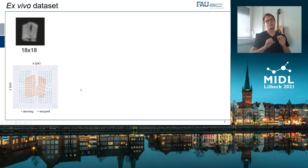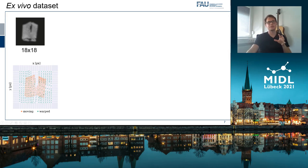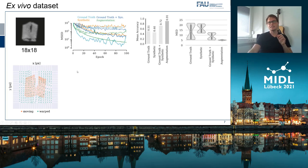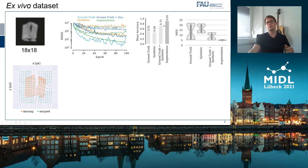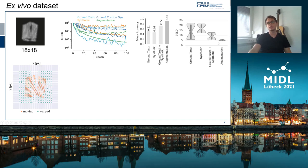When we tested our network on an experimental ex vivo dataset, which is slightly more complex than the synthetic one because it has more laser rays to be registered, we still see that our network and our custom loss function are capable of learning this transformation. The green warped points align quite accurately to the corresponding grid positions. We found that training only on ground truth or synthetic data is not sufficient for high accuracy. Combining ground truth and synthetic data in a blend achieves around 72% accuracy, but only with intensive data augmentation do we achieve very good convergence behavior, a low validation loss, and an overall accuracy of 91% on the held-out data, with very low distances to the ideal grid positions.